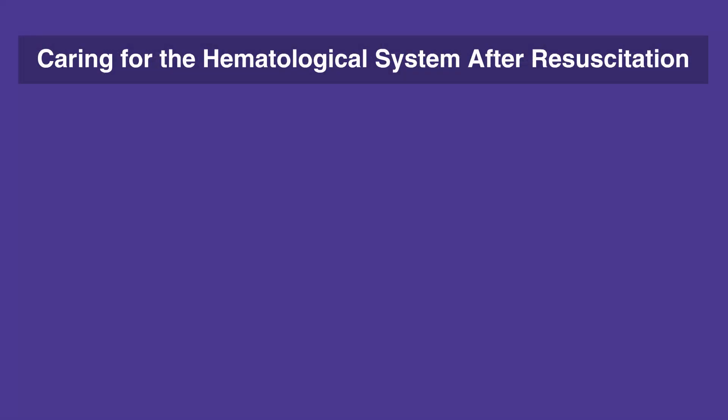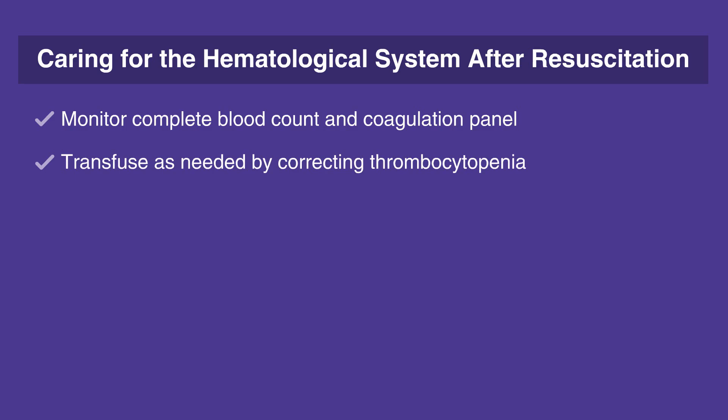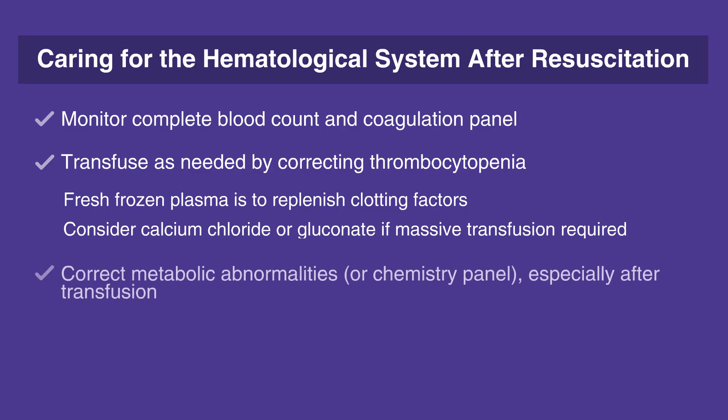When caring for the hematological system after resuscitation, follow this checklist. Monitor complete blood count and coagulation panel. Transfuse as needed by correcting thrombocytopenia. Fresh frozen plasma is used to replenish clotting factors. Consider calcium chloride or gluconate if massive transfusion is required. Correct metabolic abnormalities with a chemistry panel, especially after transfusion.